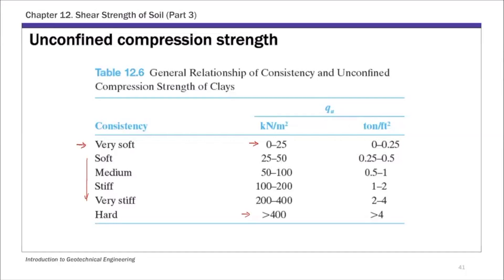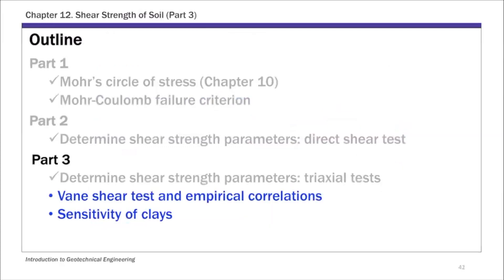That concludes basically all the triaxial tests. What's left for this chapter: we have a couple of bullet points remaining in chapter 12 — one on the vane shear test and empirical correlations, and the other on sensitivity of clays. For both topics, a short video will be posted. The vane shear test is used to determine c_u and q_u, and we also have some empirical correlations that can be used for that purpose.